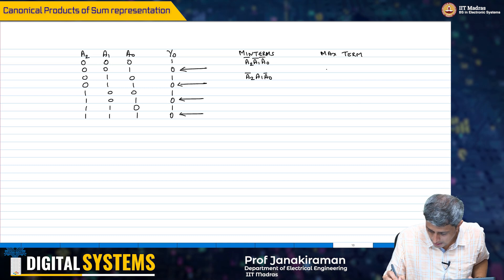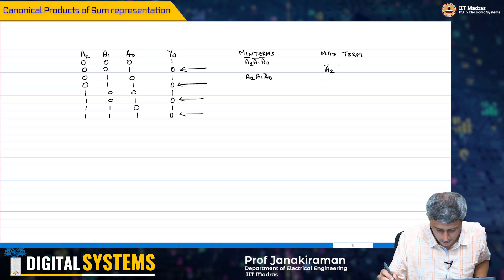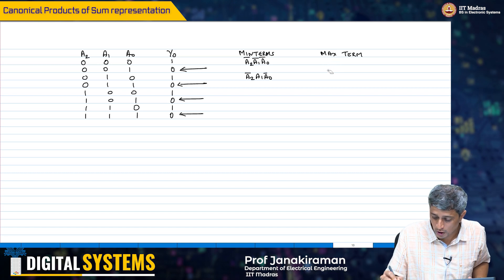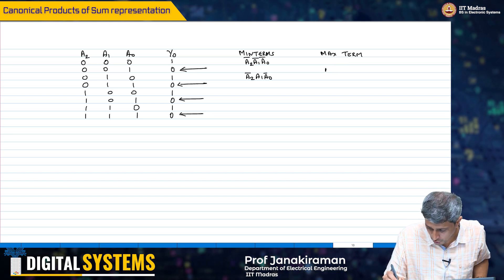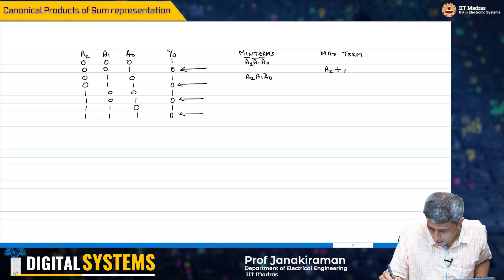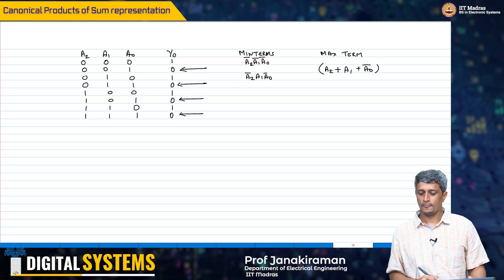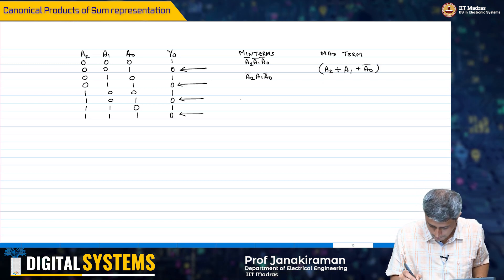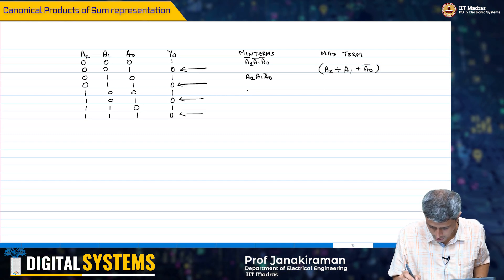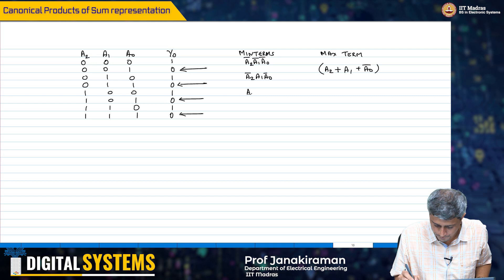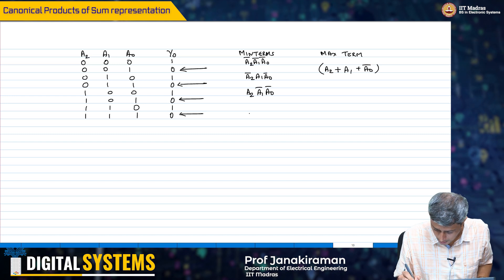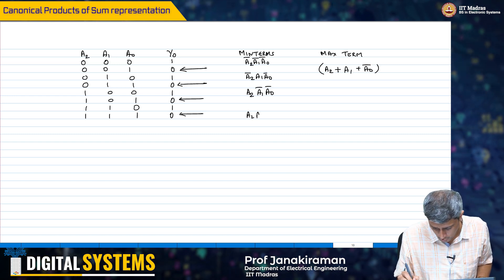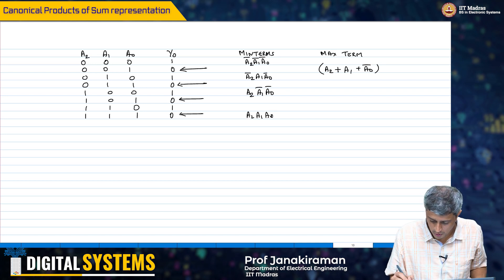For example, what is the value of the input that will result in a 0? So, therefore, that has to be a2 or a1 or a-naught-bar, okay. Let me write out the maxterms for the other cases also. This is a2, a1-bar, a-naught-bar. The last one is a2, a1, a-naught.